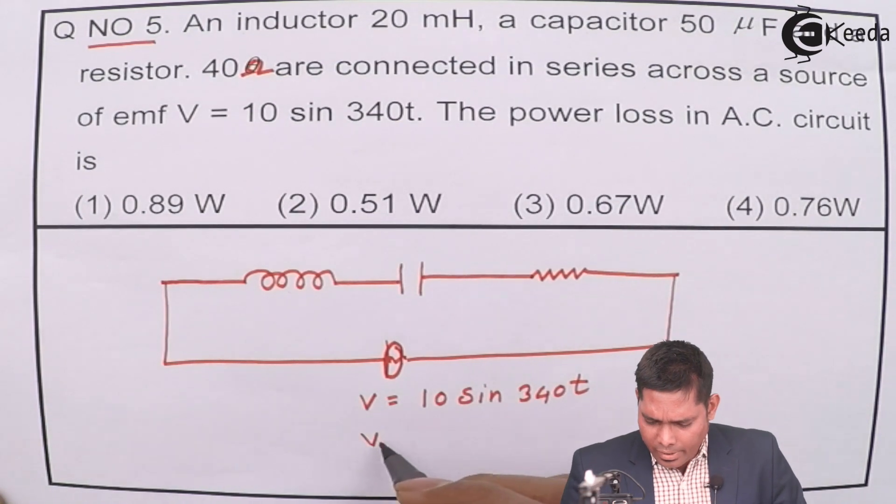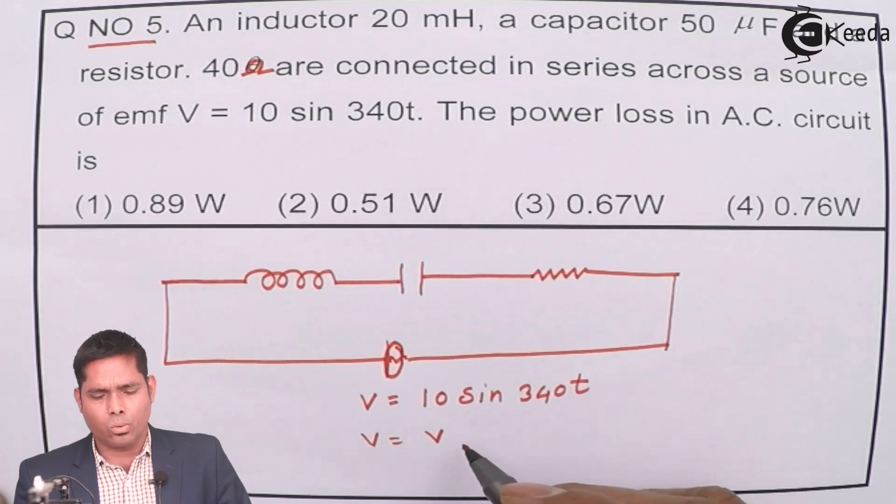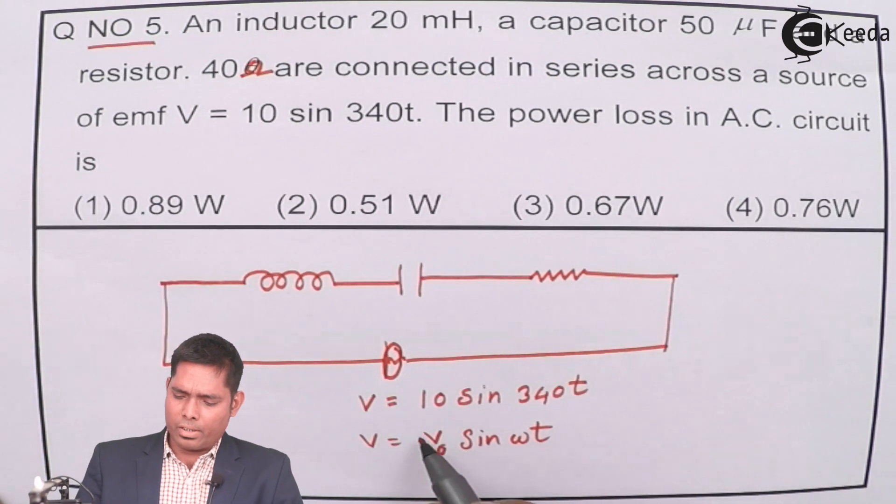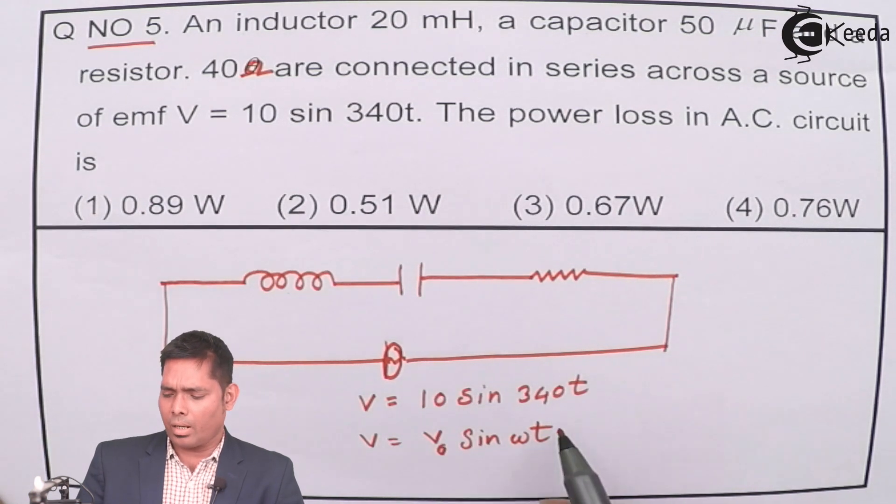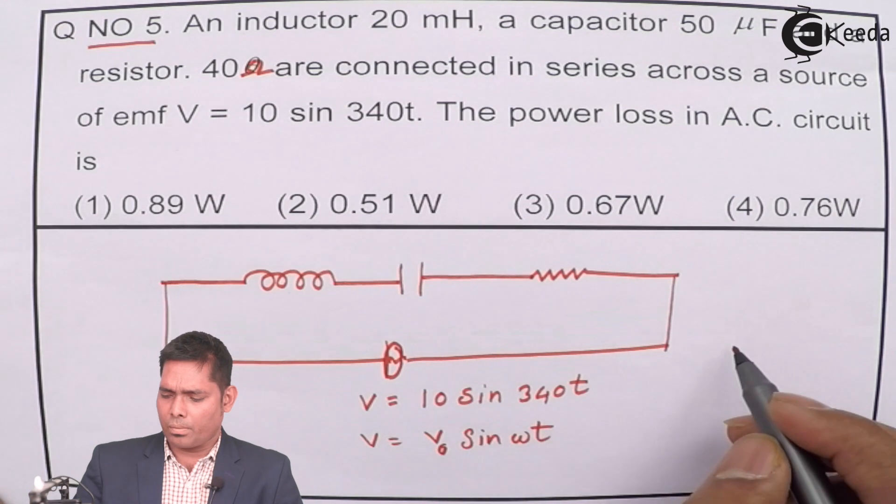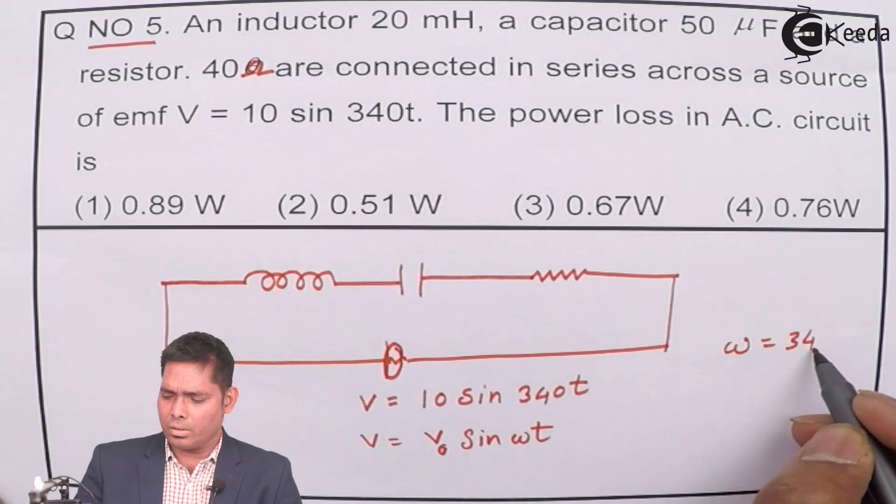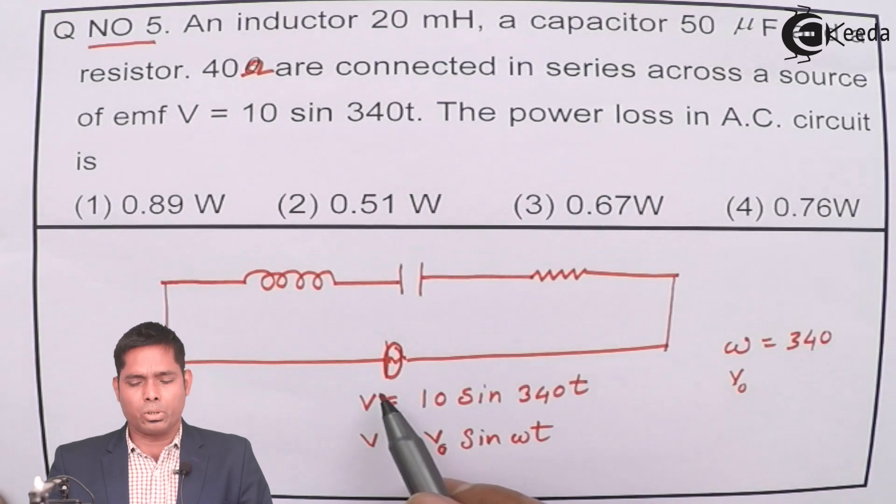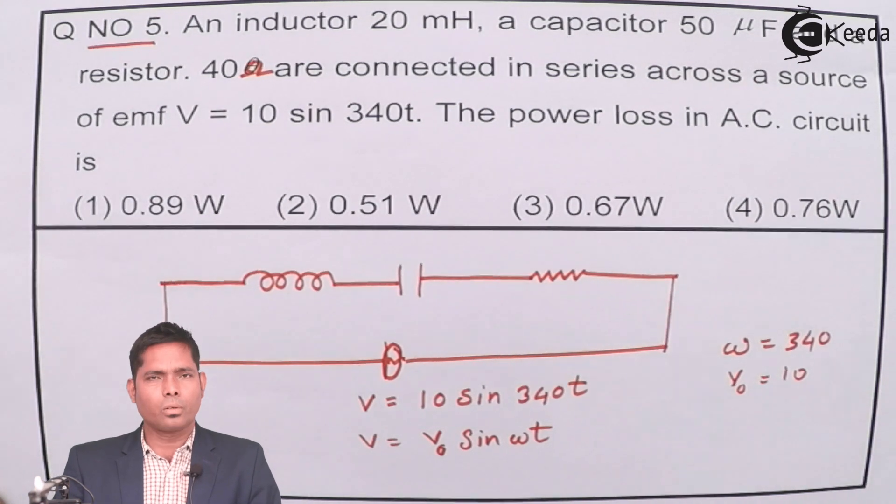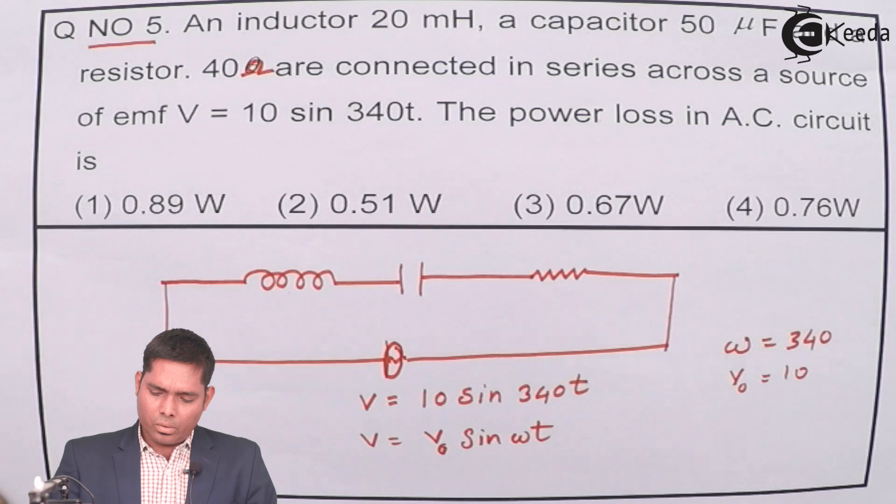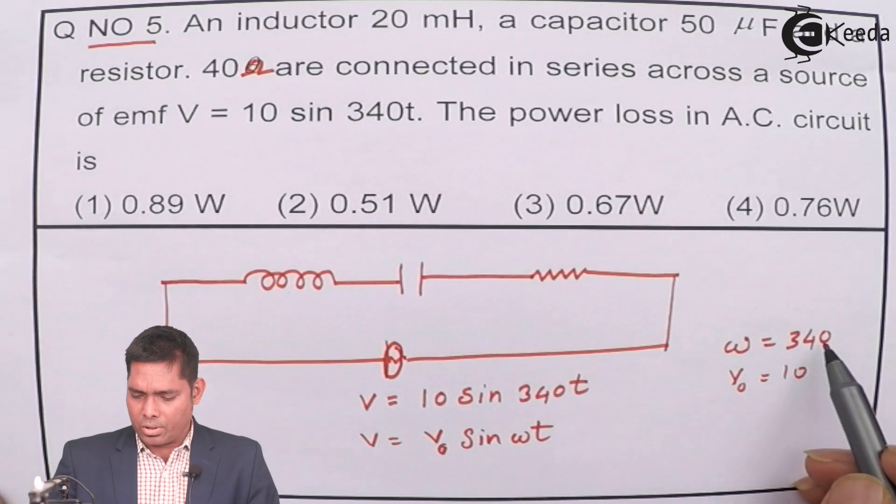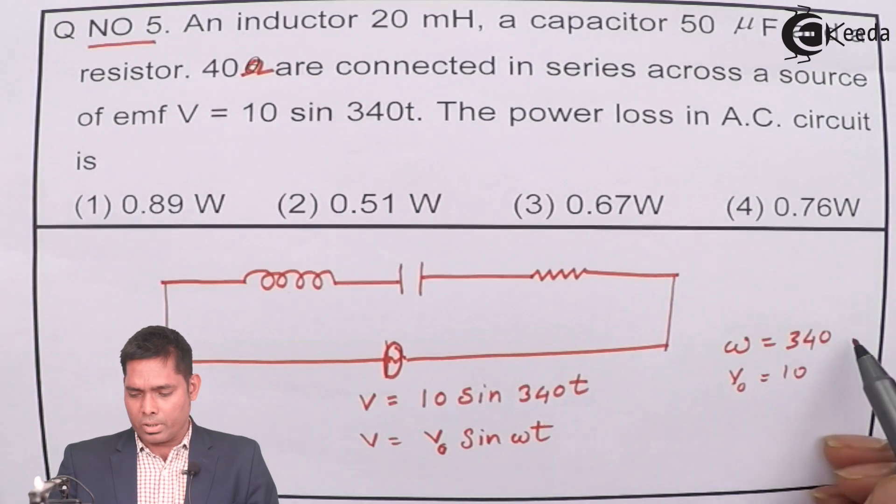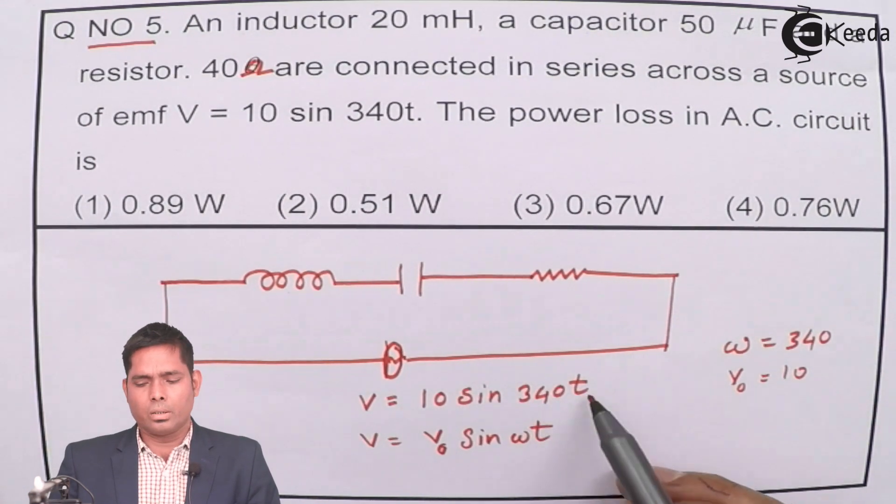We know that we can write a general expression as the EMF of alternating source as V equals V naught sin omega t, where this V naught is the peak value of the EMF that is 10 here and omega, the angular frequency is 340. So from here I can write omega is 340 and this 10 is V naught. V naught maximum amplitude of the voltage is 10. It is the angular frequency.